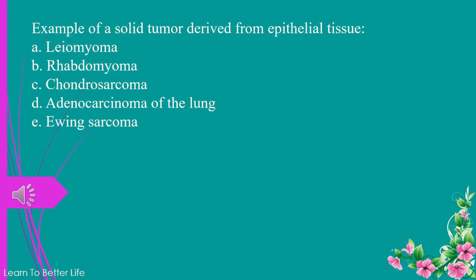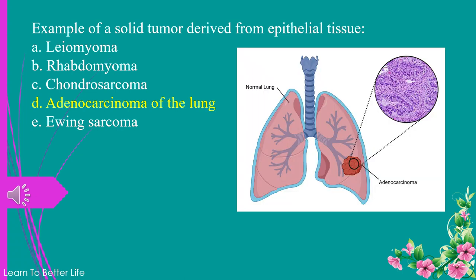Example of a solid tumor derived from epithelial tissue. a. leiomyoma. b. rhabdomyoma. c. chondrosarcoma. d. adenocarcinoma of the lung. e. Ewing sarcoma. The answer is d. adenocarcinoma of the lung.